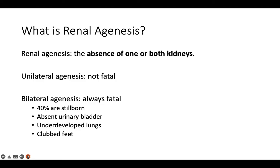While a person can live with only one kidney, agenesis of both kidneys is always fatal to a fetus. 40% of babies with bilateral renal agenesis will be stillborn, and if born alive, the baby will only live a few hours.